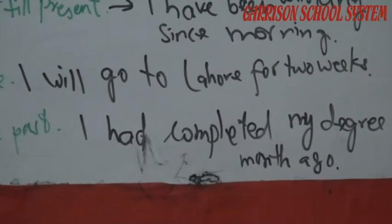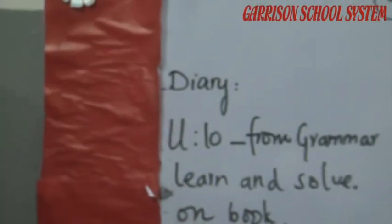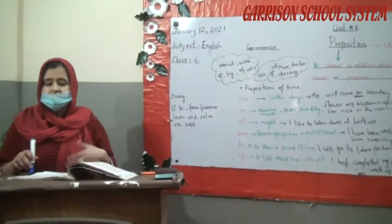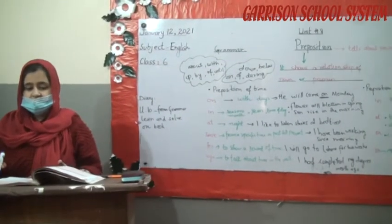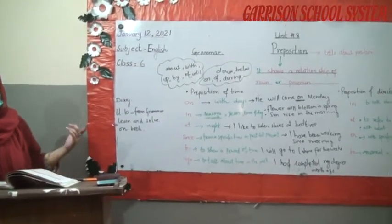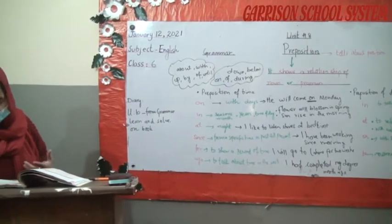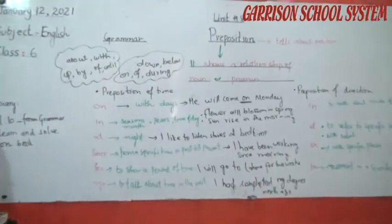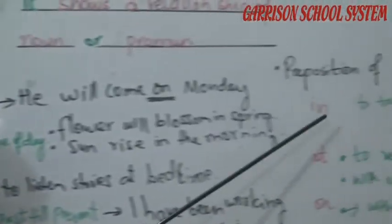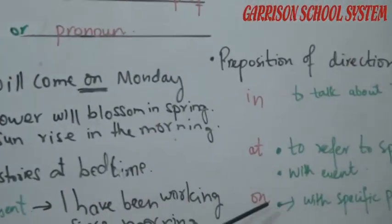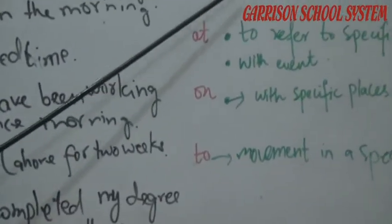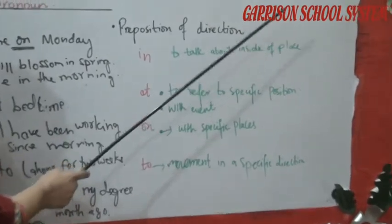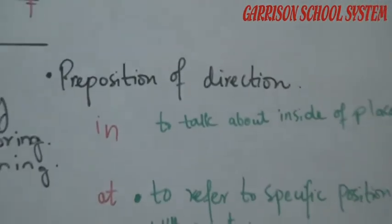These are the prepositions of time. Now we are going to discuss prepositions of direction. For common directions, the prepositions used include: in, at, on, to. 'In' is used to talk about the inside of a place — for example, as I mentioned, if you have an armchair with sides, you sit 'in' it.